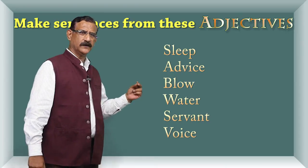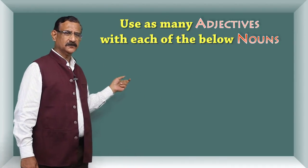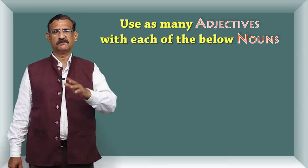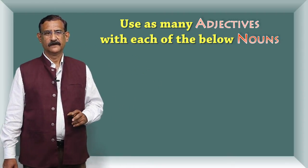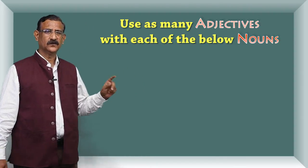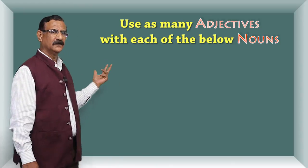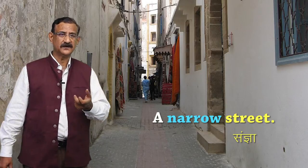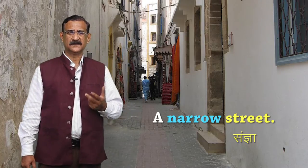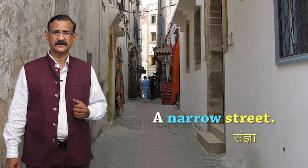We have two more exercises. Namely: 'Pratyek sangya ke saath, adhik se adhik uchit vishashanon ka prayog karo.' For example, a narrow street — pratyek sangya, street sangya hai — adhik se adhik visheshan karo.